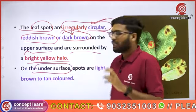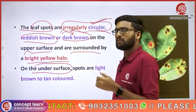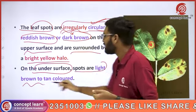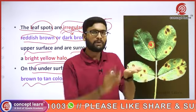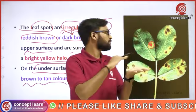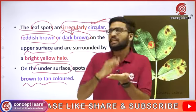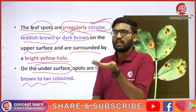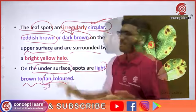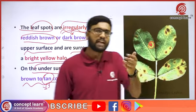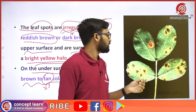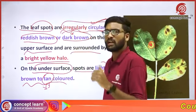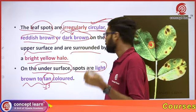On the undersurface of the leaf, the spots are light brown to tan colored. So while the upper surface shows reddish brown or dark brown spots, the undersurface shows tan colored spots.